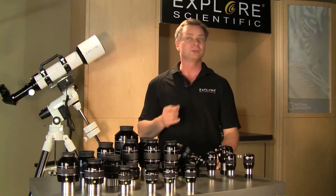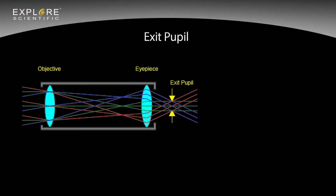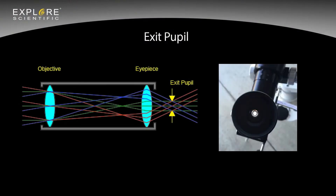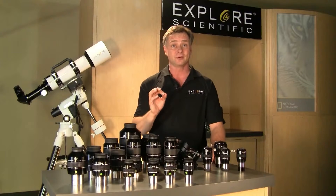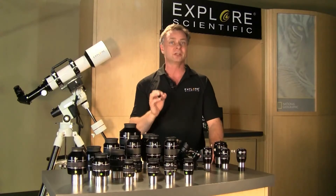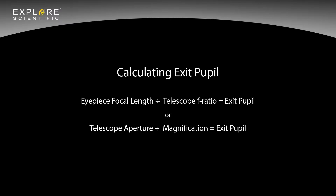Now we'll discuss exit pupil. Every telescope and eyepiece combination will produce an exit pupil — it's the focused beam of light where the image is viewed. The diameter of the exit pupil changes with magnification. Lower magnifications produce a larger exit pupil, giving a brighter image; higher magnifications produce a smaller exit pupil with less image brightness. You take the eyepiece focal length in millimeters and divide it by the telescope f-ratio to get the exit pupil, or take the telescope aperture in millimeters and divide it by magnification. Both results will be in millimeters.